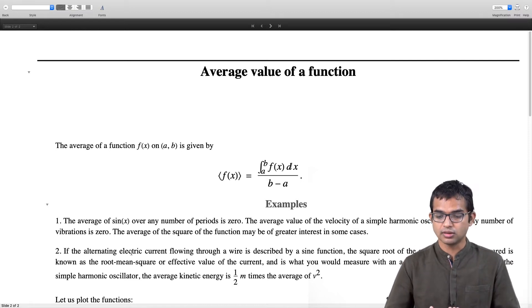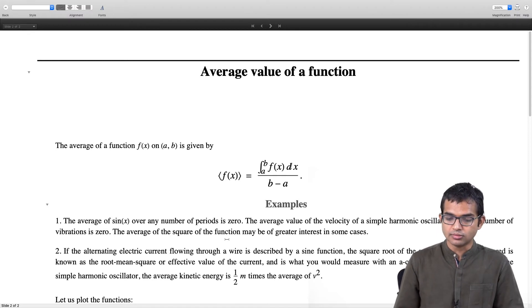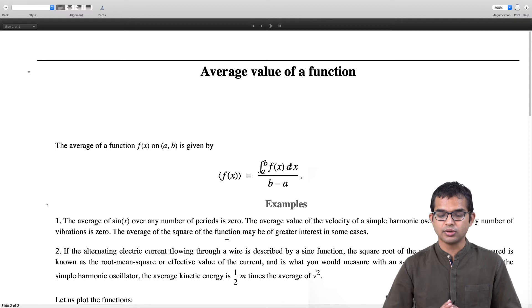Clearly, the current being 0 is not an accurate way of representing what it is doing. The current can do things for you, which means it is not just a 0 object. A more useful quantity to measure the current is in fact the root mean square or effective value of current, which is what you would measure if you took an AC ammeter. In the example of the simple harmonic oscillator, the average kinetic energy is something that you might be interested in measuring.